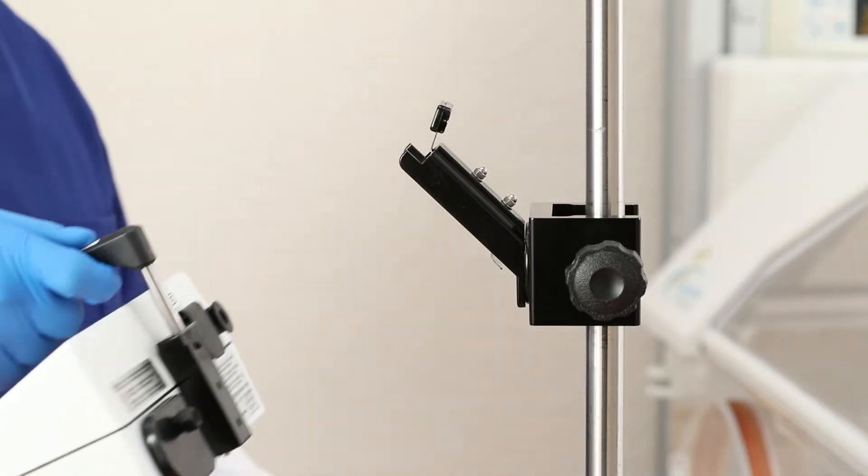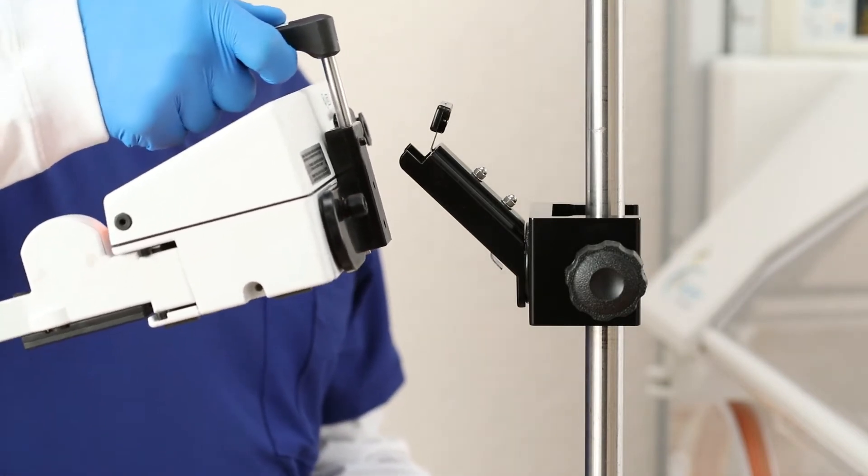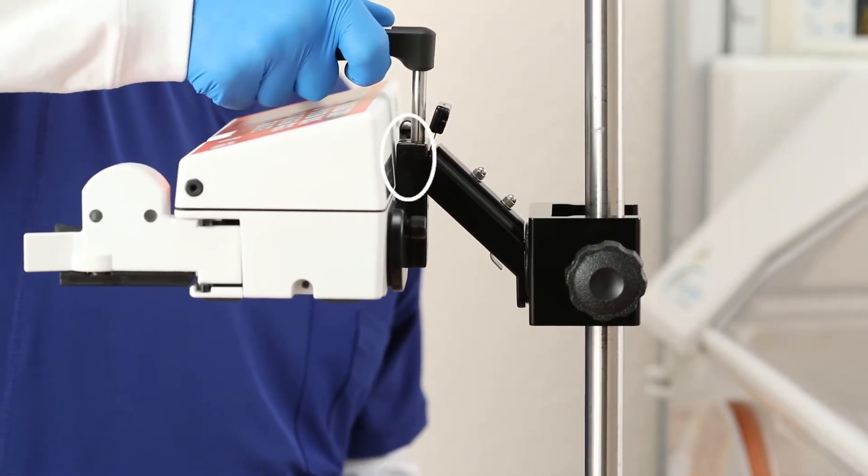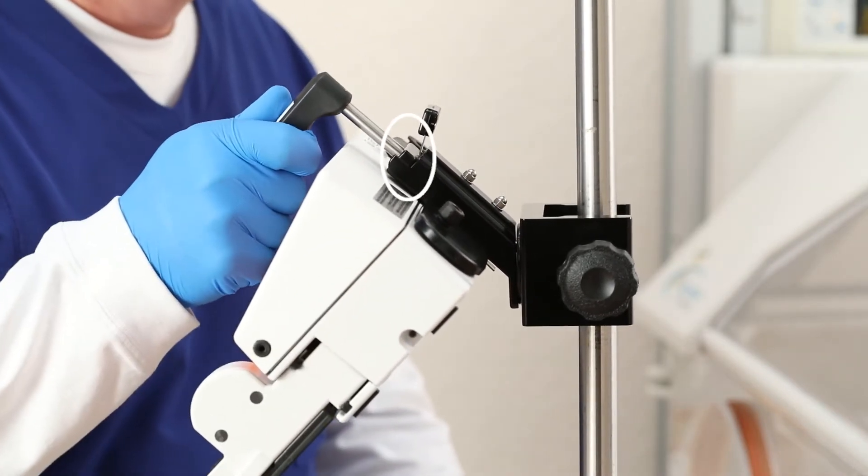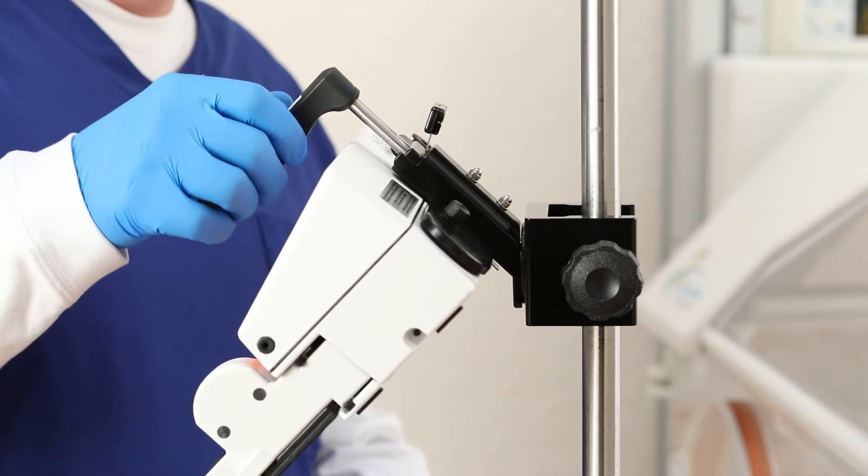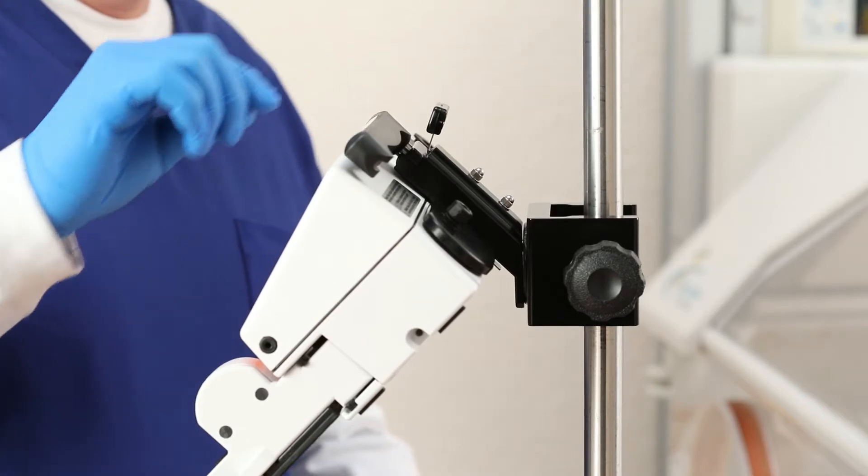The second step is to mount the pump to the pole clamp. To mount the pump to the clamp receptacle, ensure you are using the pump handle. Align the locking tabs at a 90 degree angle into position and gently push down on the handle of the pump until it locks into position. You will hear a clicking sound to ensure it is secure. Return the handle to the store position.